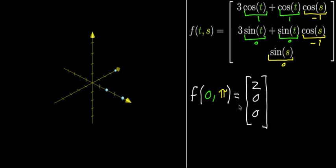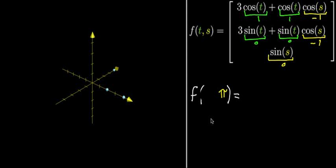And another thing you can do is say, okay, maybe rather than thinking of evaluating at a particular point, imagine one of the inputs was constant. So let's imagine that s stayed constant at pi, but then we let t range freely. So that means we're gonna have some kind of different output here.